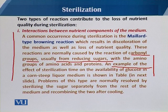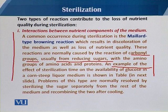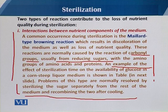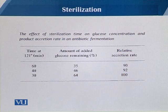As an example, consider the effect of sterilization time on the availability of glucose in a constant liquor medium, shown in the next slide. This problem of nutrient interaction is normally resolved by sterilizing some components separately — for instance, sterilizing glucose or similar materials separately from the rest of the medium.